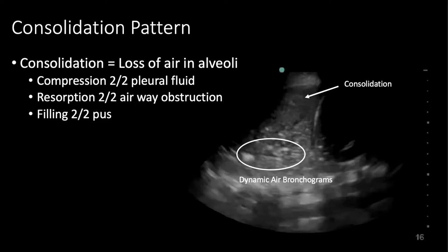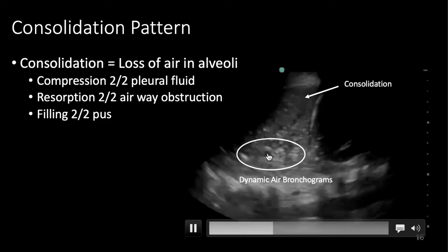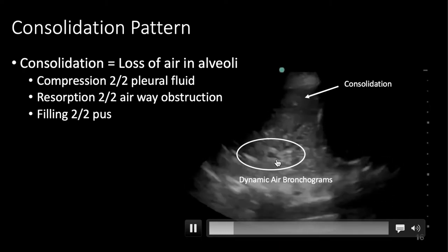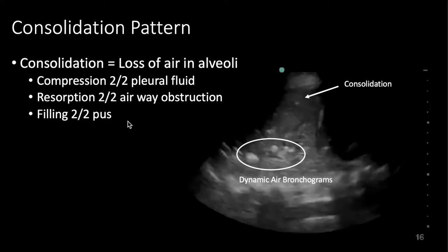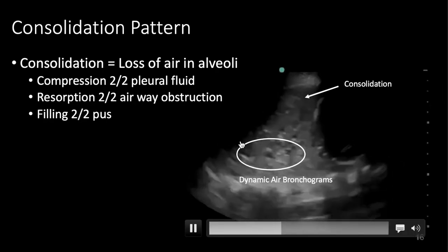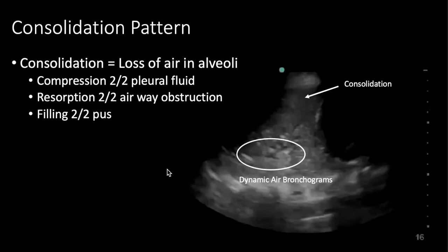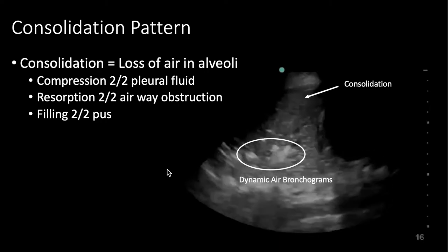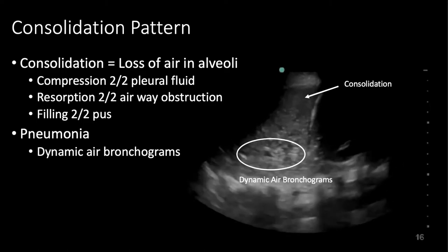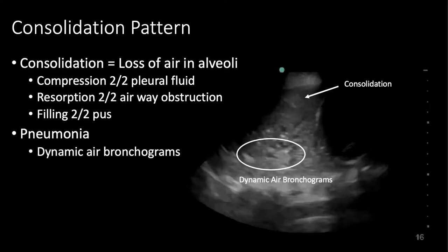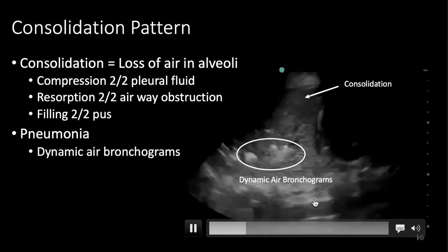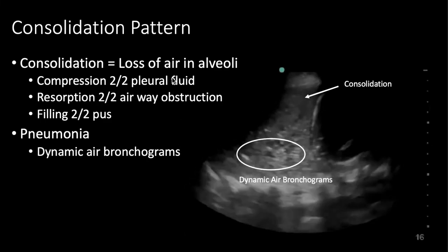When you have filling due to purulent material, the smaller airways — the bronchioles that lack cartilage — are still open. As a result, you can see air moving in those bronchioles, which creates dynamic air bronchograms. If the lung is being compressed or collapsed through reabsorption, you'll lose these air bronchograms because the bronchioles are physically squished. So dynamic air bronchograms are rare and have poor sensitivity, but they're pretty specific for pneumonia.